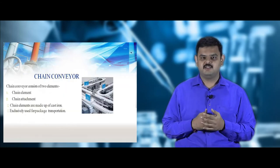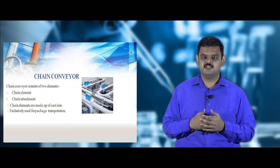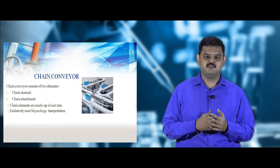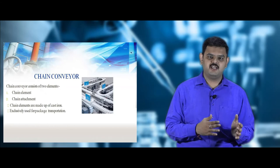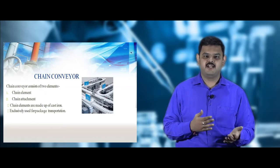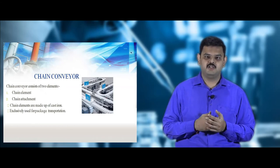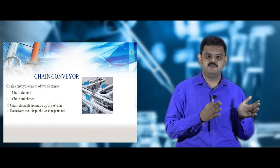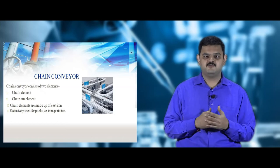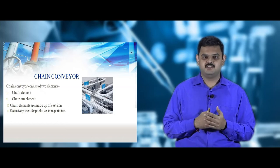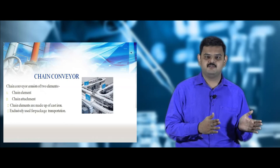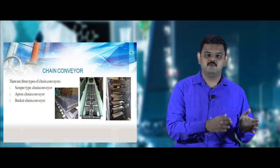Chain conveyors are mostly useful in the packaging industries. The two elements are the chain element and chain attachment, which can be attached to a flight element or wooden element so that material is transported from the feed end to the discharge end. They are useful for sending packed items to the go-down.